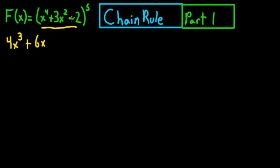And since the 2 doesn't have an exponent, you're just going to leave it there. And now you're going to multiply that by this exponent right here. So you're going to multiply that by 5, and then you're going to multiply that by the original function right here, so x to the fourth plus 3x squared minus 2.